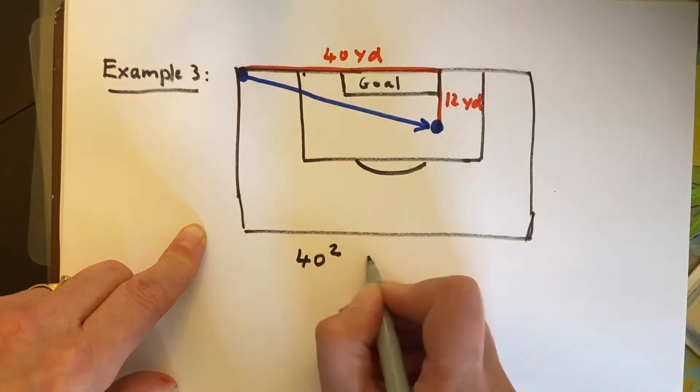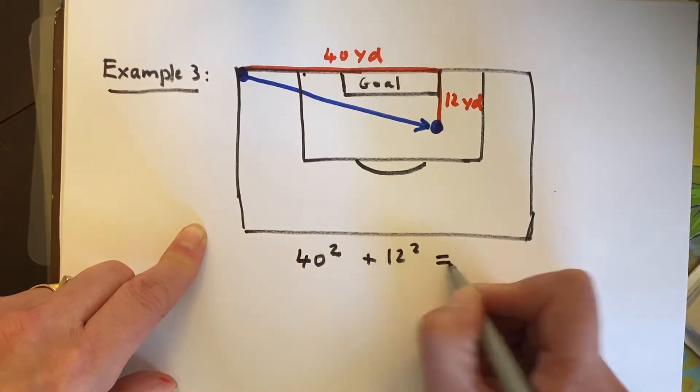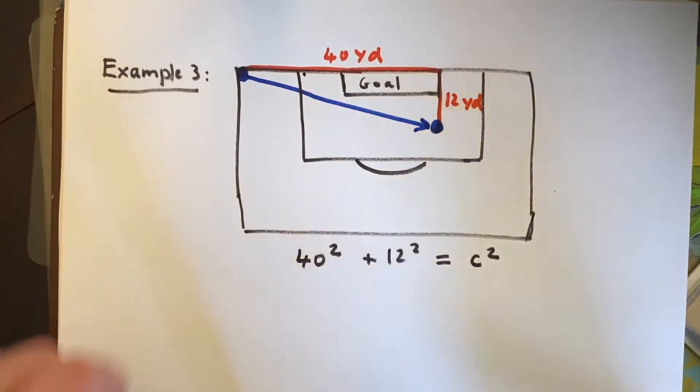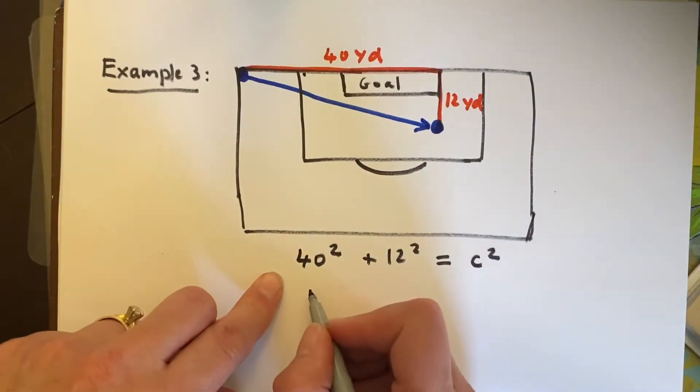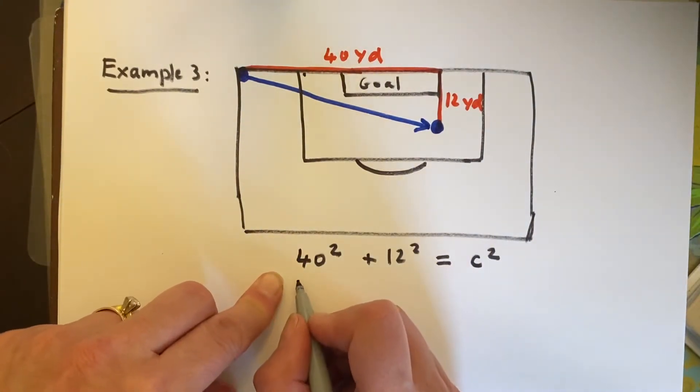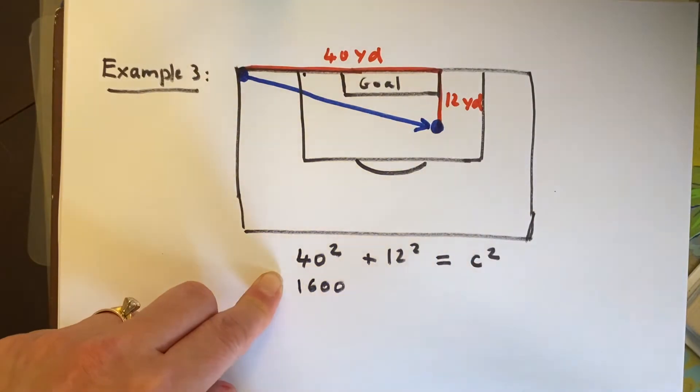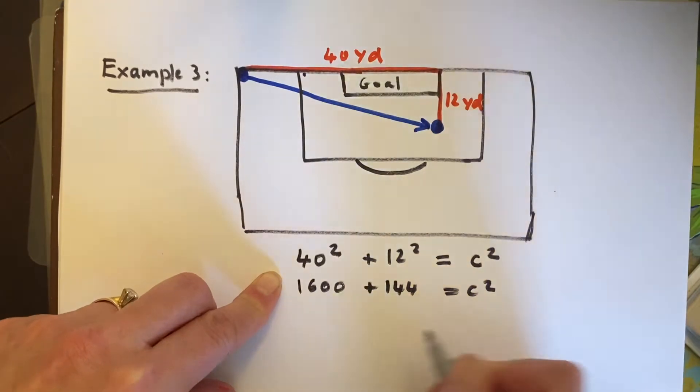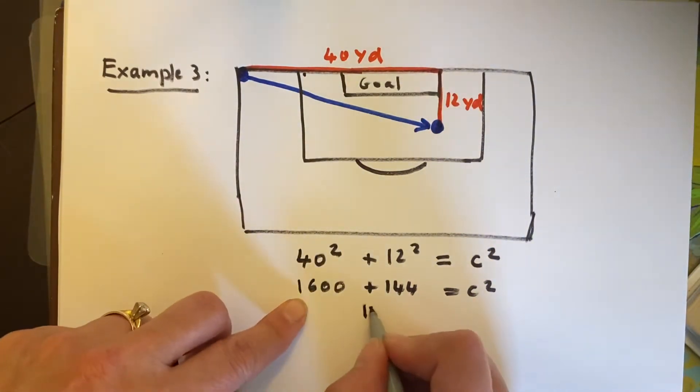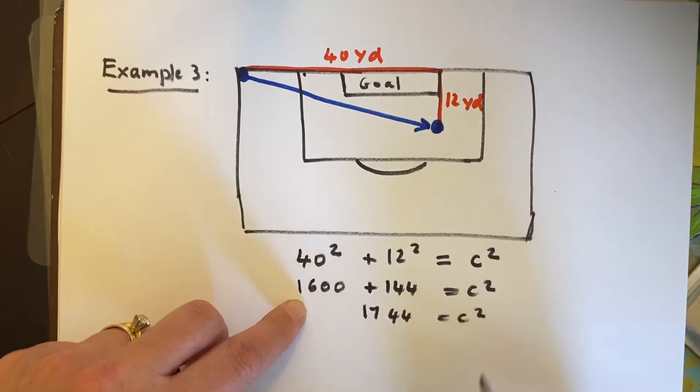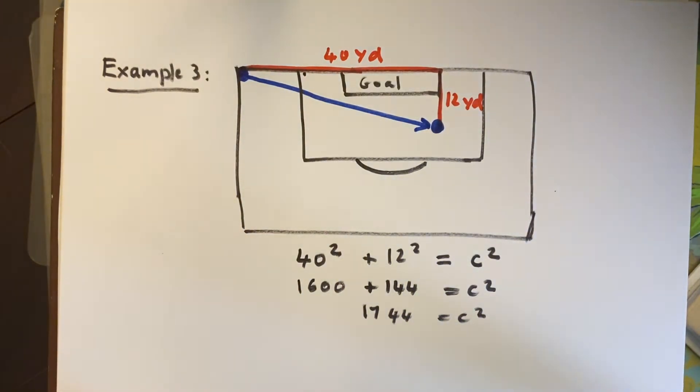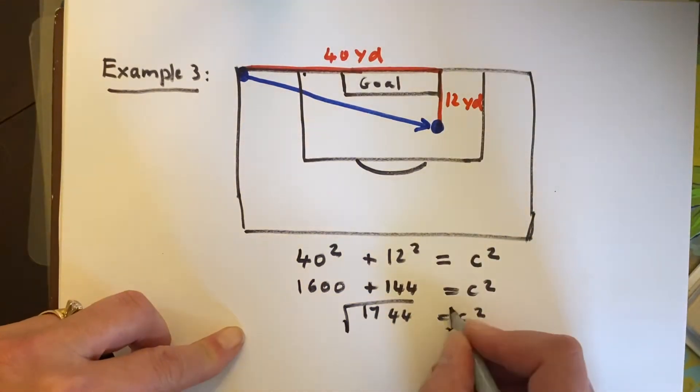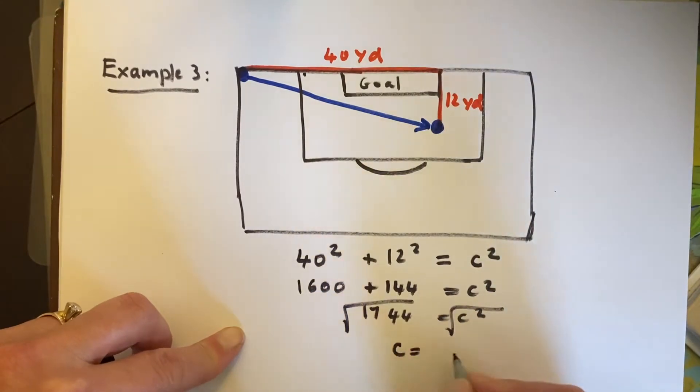40 squared plus 12 squared has to equal C squared, whatever that hypotenuse is. So 40 squared is going to give us 1,600. 12 squared is going to give us 144 equals C squared. When I add this together I get 1744 equals C squared. And then if I take the square root, I am going to end up with 42. C equals 42.